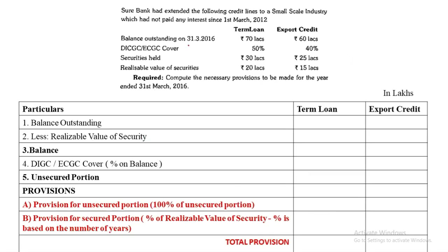The question: Sure Bank had extended the following credit lines to a small scale industry which had not paid any interest since 1st March 2012. Balance outstanding is given as for 2016 — so from 2012 to 2016 that is more than three years. They are giving term loan and export credit, ECGC cover, security held, realizable value. Compute the necessary provision for the year ending 31st March 2016.